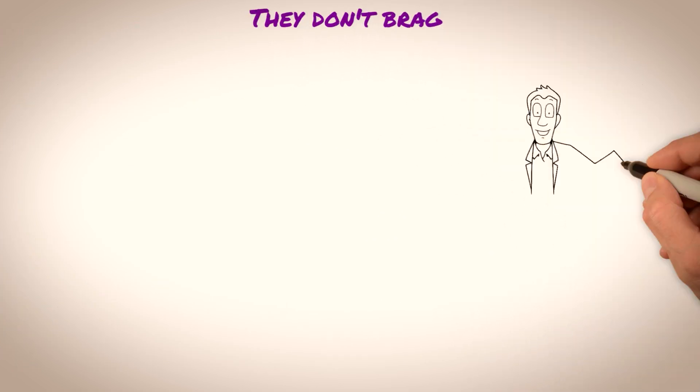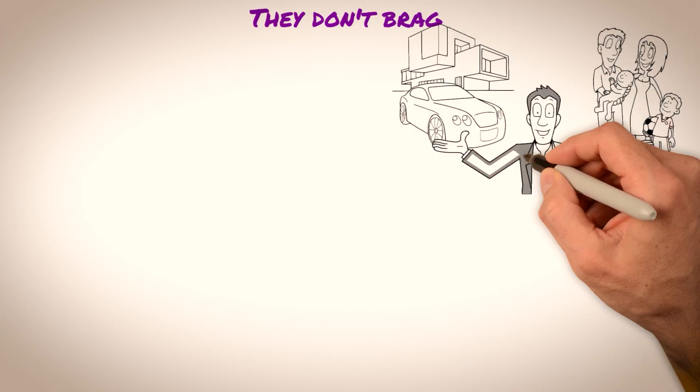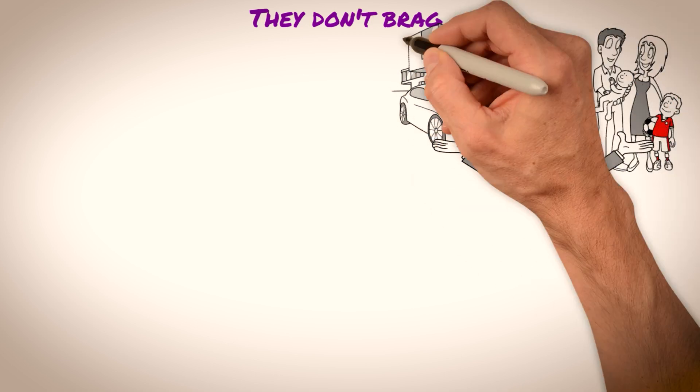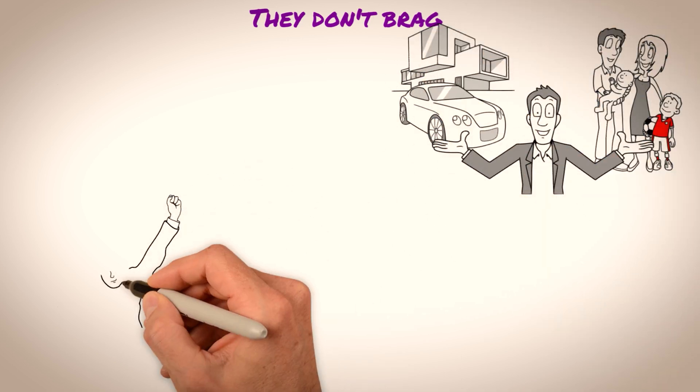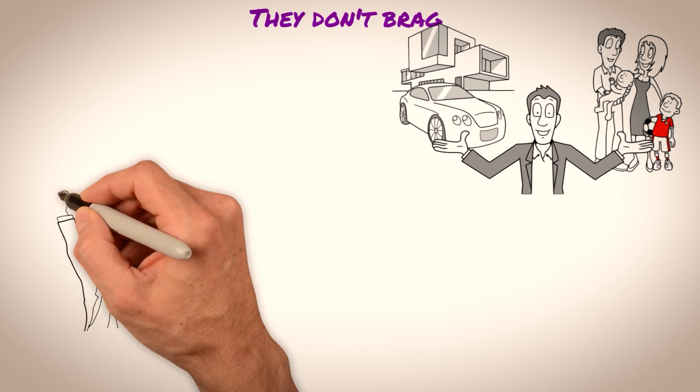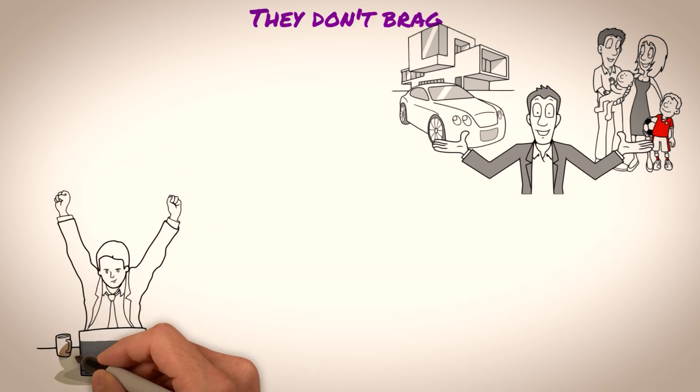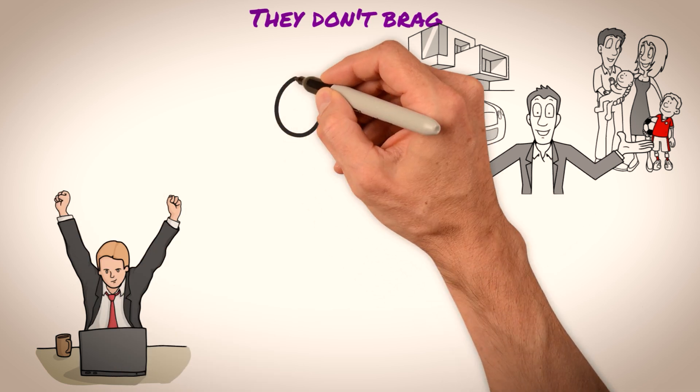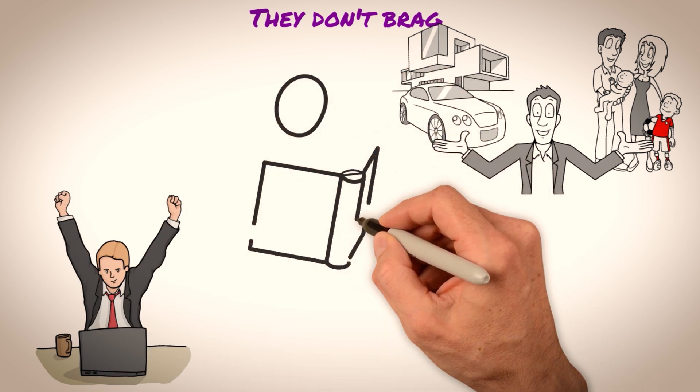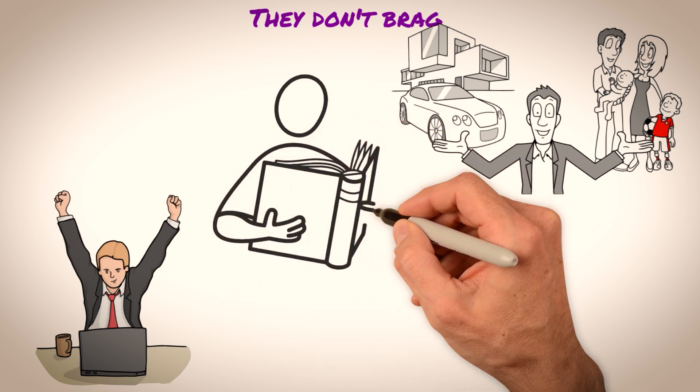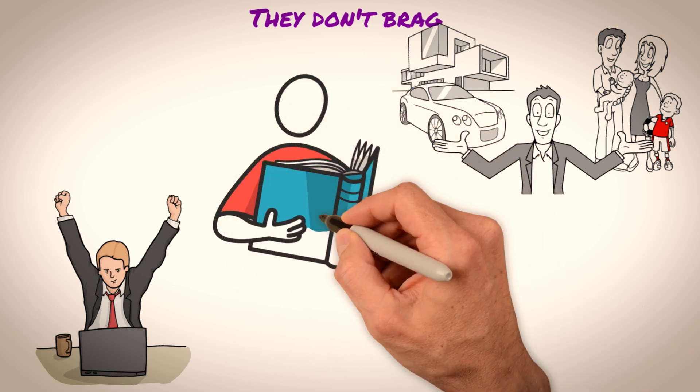They don't brag. Sigma males are often regarded as highly successful individuals, yet they are not known for bragging or self-promotion. This makes them seem intimidating to others, as their reputation for achievement and success precedes them. They are known for their independent and non-conformist nature, which often means that they are not interested in seeking the approval or recognition of others.